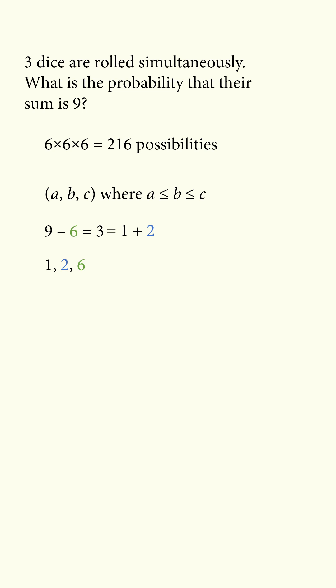the smallest two numbers can be 1, 2, and 6. We then increase the second number and decrease the third to get 1, 3, 5. We then have 1, 4, 4.